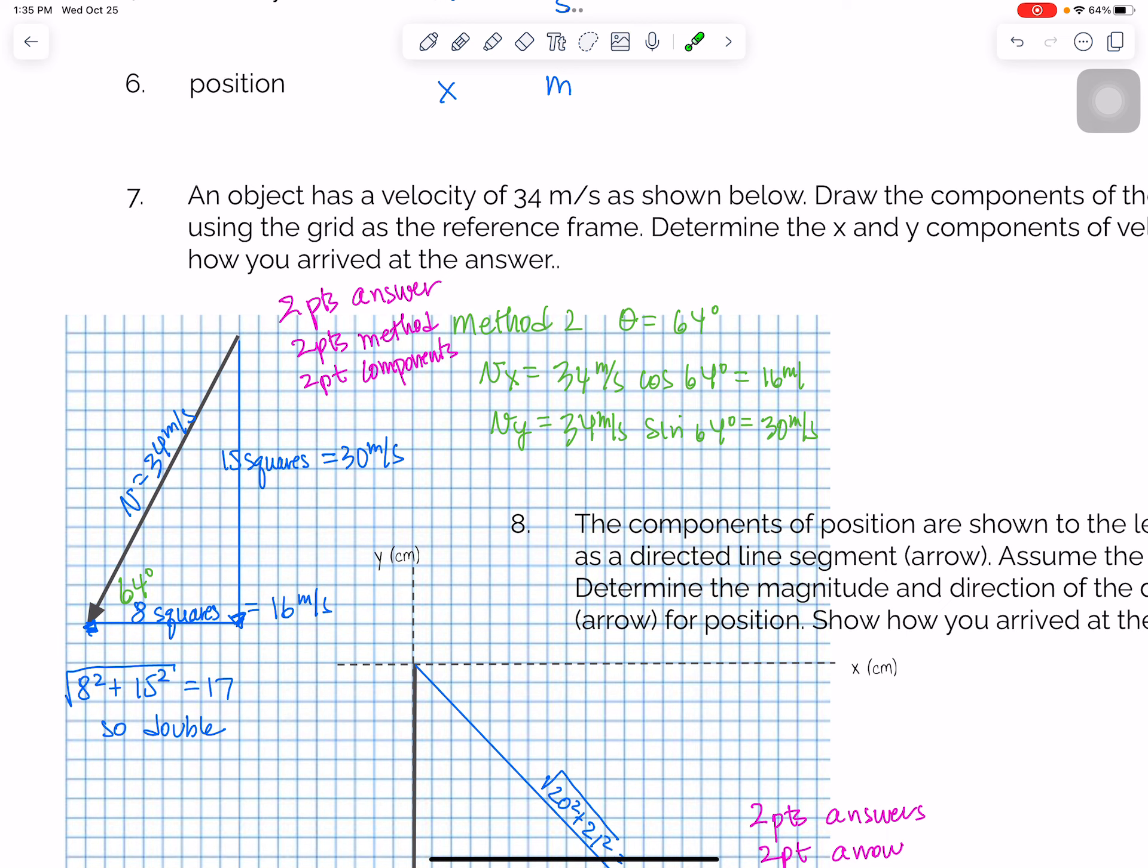Another way to do it was to measure this angle is 64 degrees, and so that method is over here. Angle is 64 degrees. To calculate the X velocity, that would be this one right here, which is cosine, so 34 meters per second times cosine of 64 is 16 meters per second. And then the Vy, which is this one, is 34 meters per second times the sine of 64 is 30 meters per second. So SOHCAHTOA. Either one works.